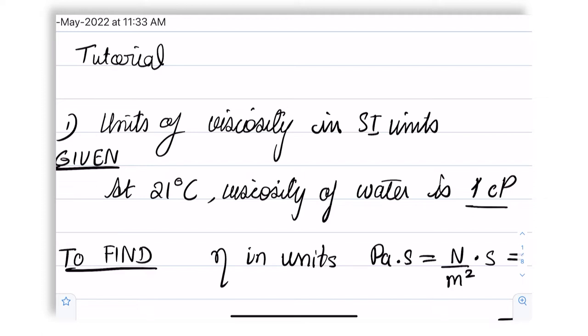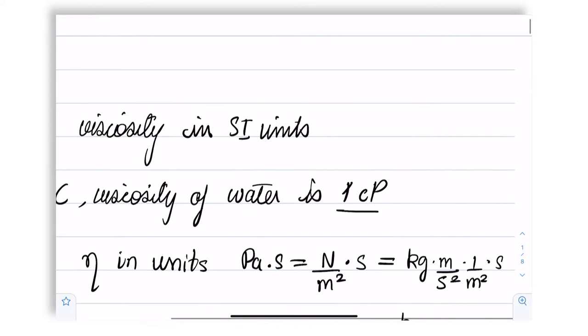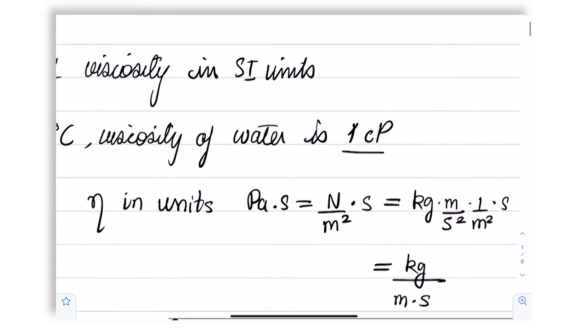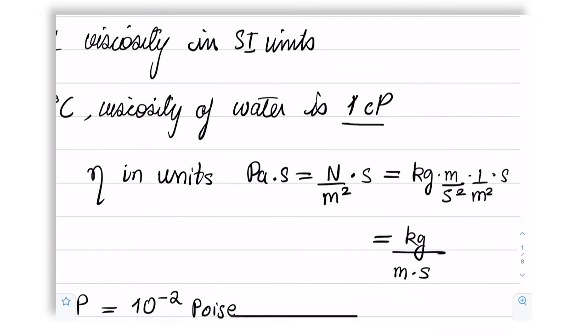What this means is that we can also convert Pascal into Newton per meter squared. Pascal is pressure, force per unit area, into seconds, which converts to kg meters per second squared. That is mass into acceleration upon meter squared into seconds, which leaves you with kg per meter second, or Pascal second.